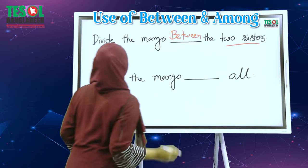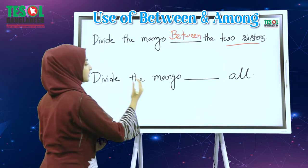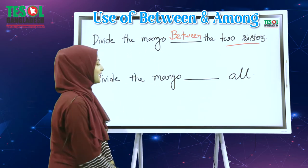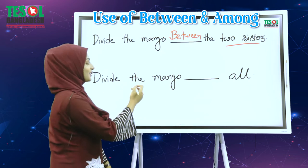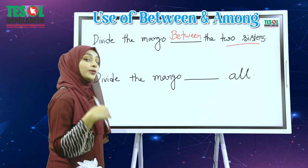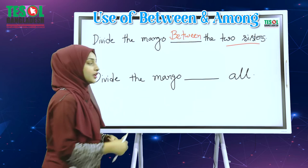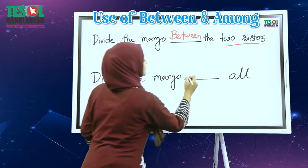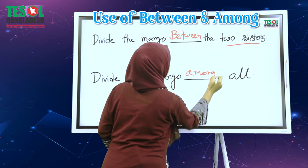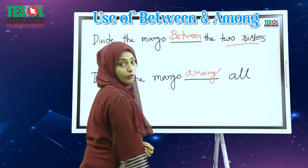And next example: divide the mango ___ all. Ekhanei dhujer odhik bujhano hoxhe, dhujer beshi bola hoxhe. So ekhanei amra use korbo 'among' — divide the mango among all.